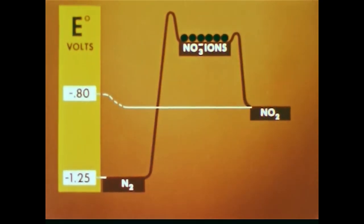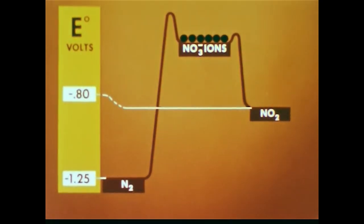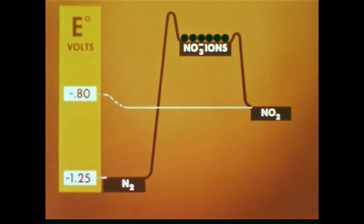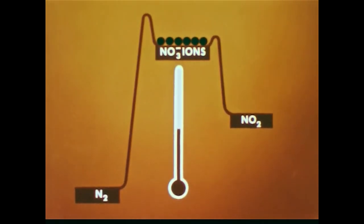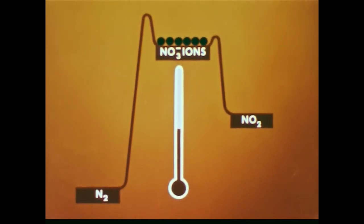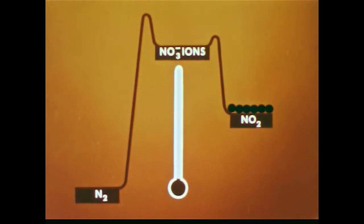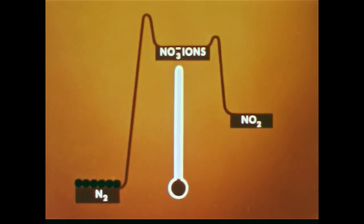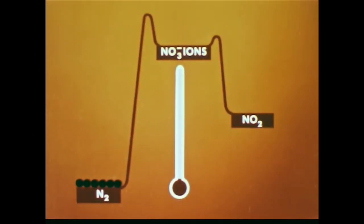The E0 values tell us that both these reactions are possible, but the availability of energy in the system — that is, the temperature — plays a major role in determining which reaction predominates. We have observed that a low temperature favors the product nitrogen dioxide gas. If we want to favor nitrogen gas as a product, a high temperature is required.